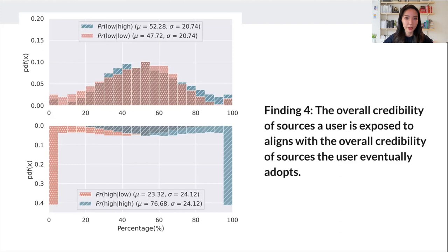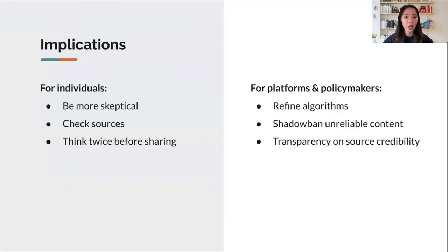Why does it matter? In the digital age, the line between fact and fiction blurs easily, shaping our beliefs, decisions, and even our society at large. Our research suggests actionable steps for countering misinformation effectively. For individuals, it's about adopting a healthy skepticism, verifying sources, and pausing before sharing.